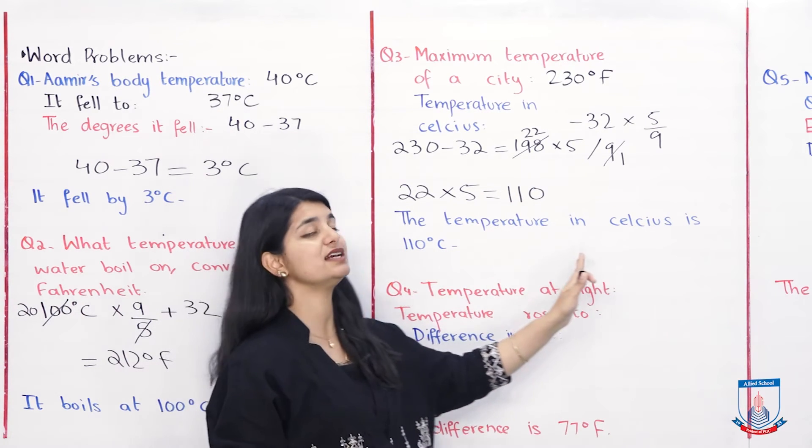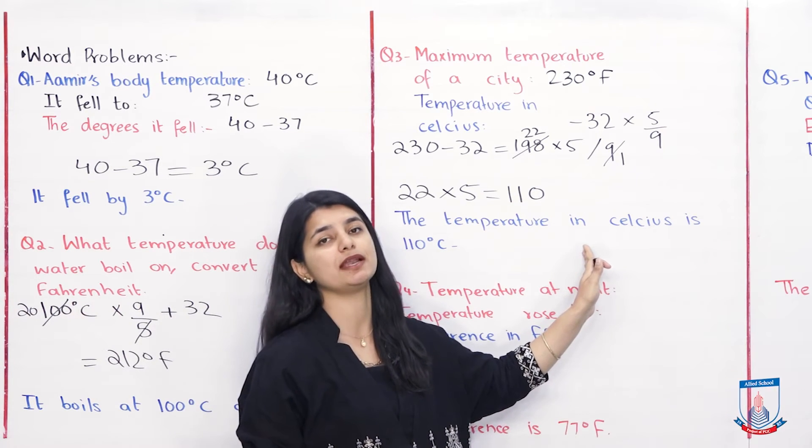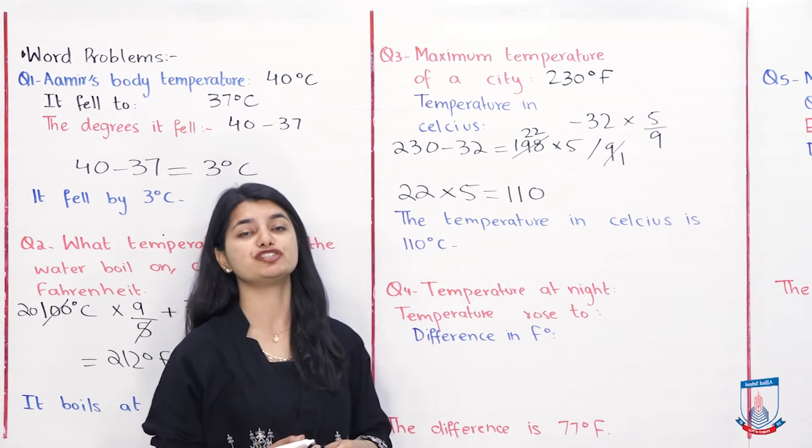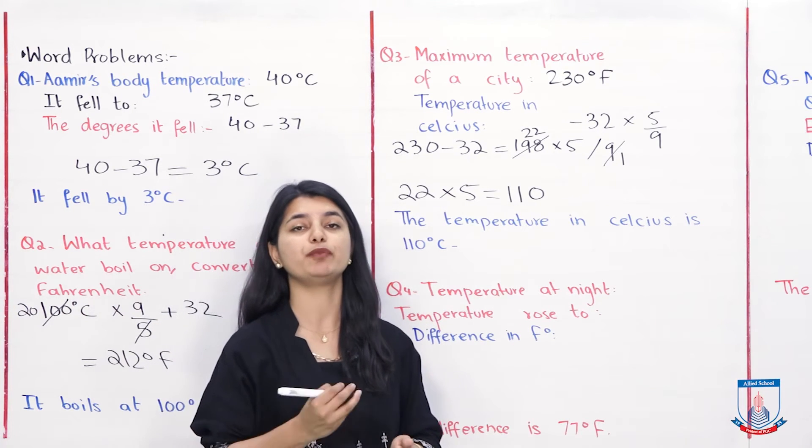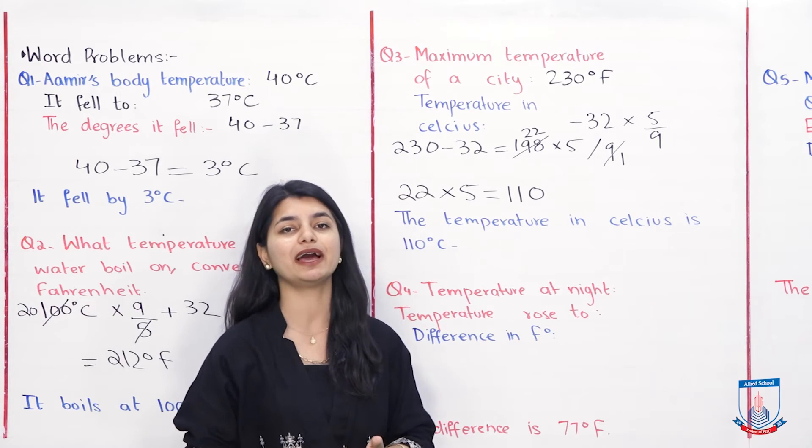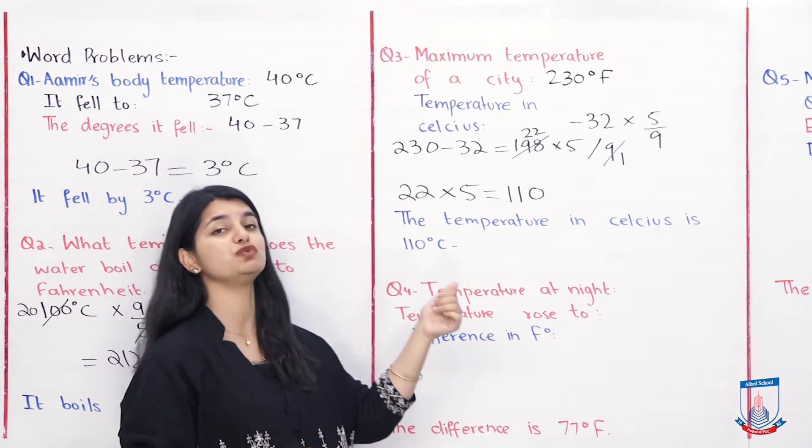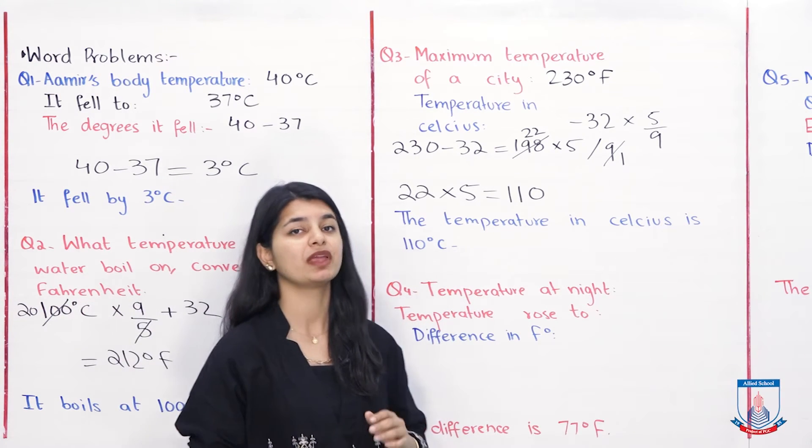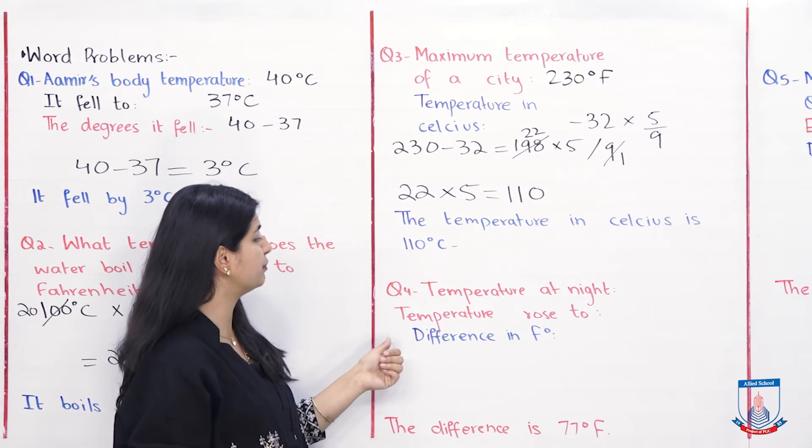So the temperature in Celsius is 110 degree centigrade. So the highest temperature was present in Fahrenheit, we converted it to Celsius and that equals 110 degree Celsius. Next part is our question number 4.